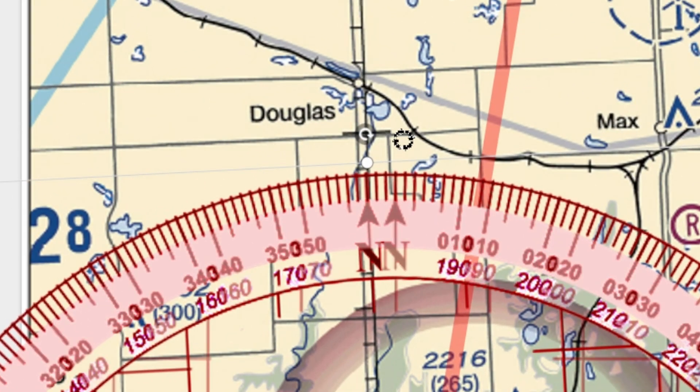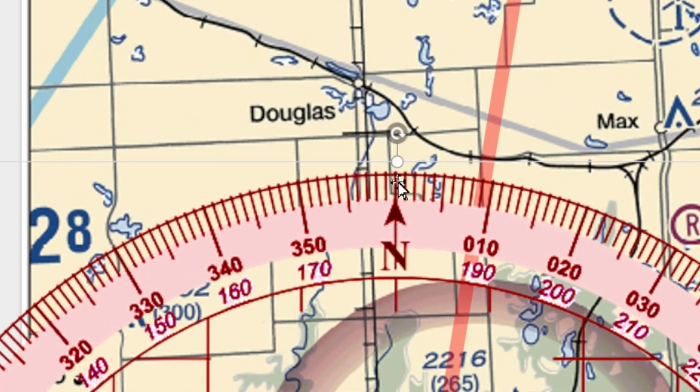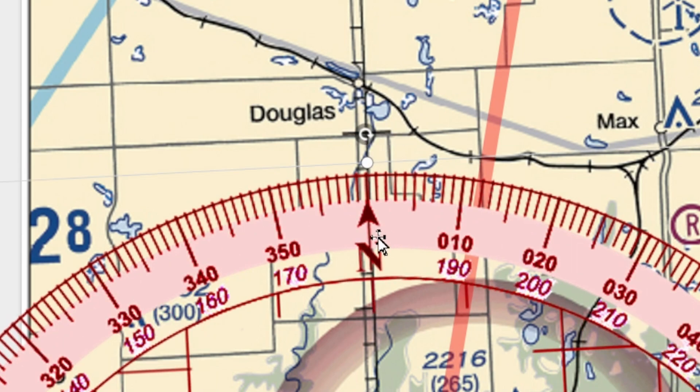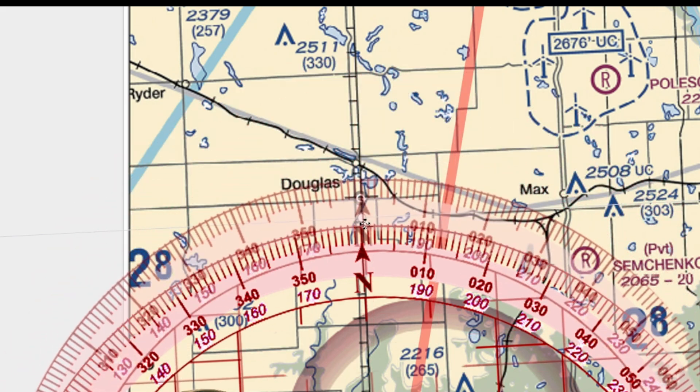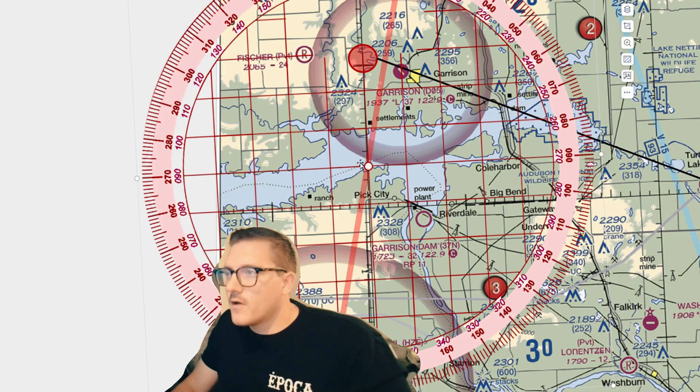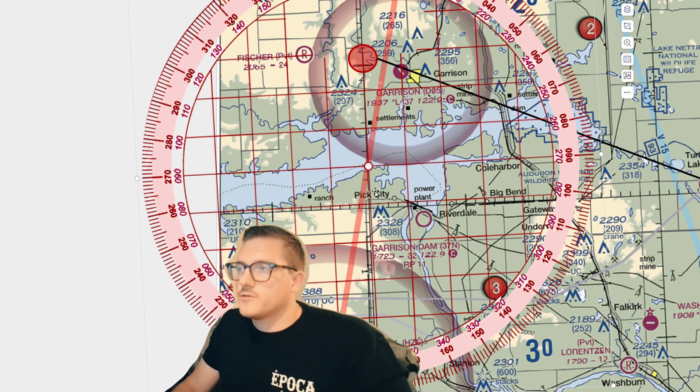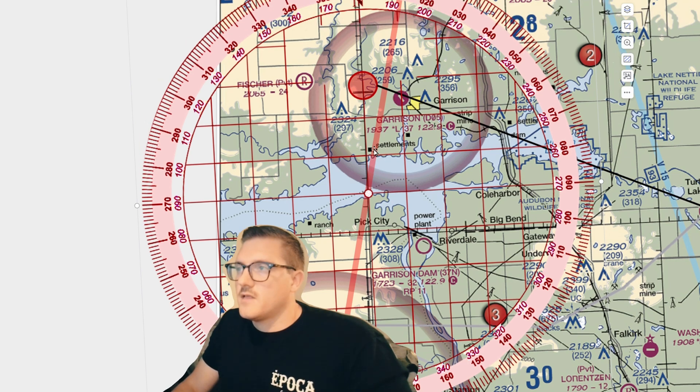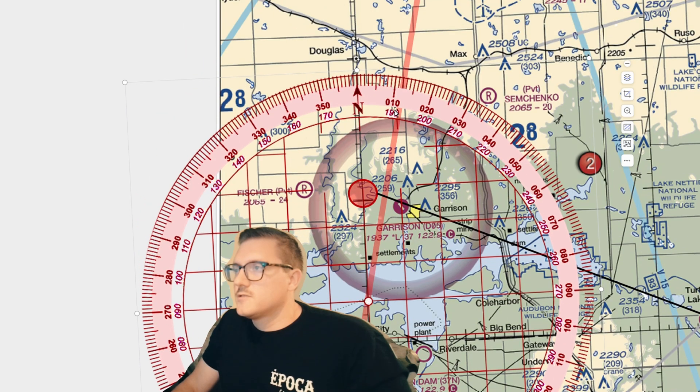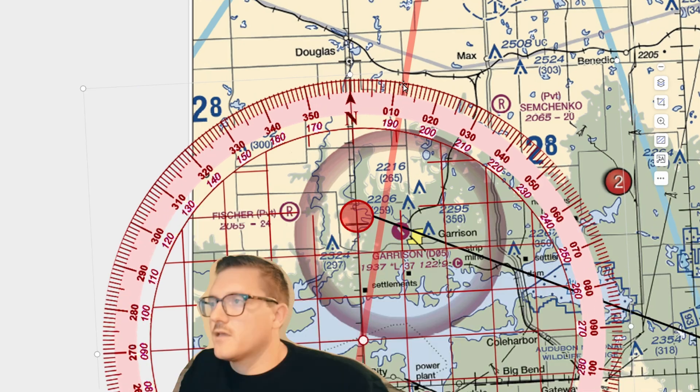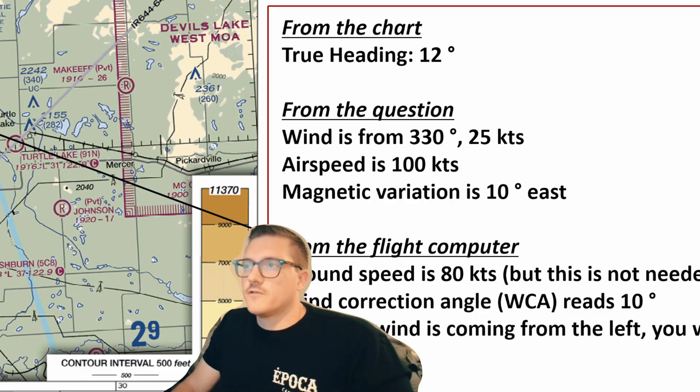Now a very important step here is we want to make sure our plotter is lined up with this line of longitude so we get an accurate reading. You can see if it was off a little bit like here, it would read closer to 9. We need to make sure this north is lined up directly on this line of longitude. So our center of it is right where our true course intersects one of these lines of longitude. So if we read off the plotter, it looks like a course of 12. So the first part's done. From the chart, we have our heading of 12.